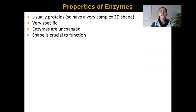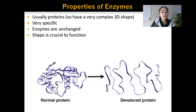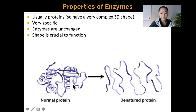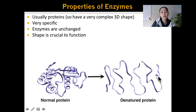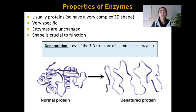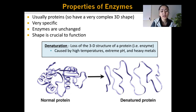Another very important property of enzymes is that their shape is crucial to their function. Here is a normal enzyme with its complex three-dimensional folding. Remember, proteins are just a long chain of amino acids, so you could actually unravel them into a long chain. However, if you take this three-dimensional shape and unravel it, this protein wouldn't work anymore. This is called denaturation — the loss of the three-dimensional structure of a protein, or in other words, an enzyme.